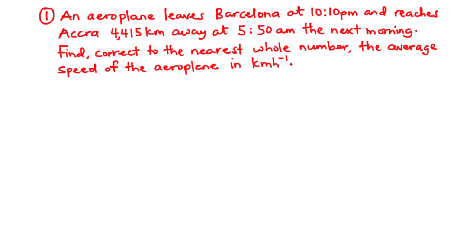An aeroplane leaves Barcelona at 10:10 pm and then reaches Accra, 4415 km away, at 5:50 am the next morning. Find, correct to the nearest whole number, the average speed of the aeroplane in km per hour.